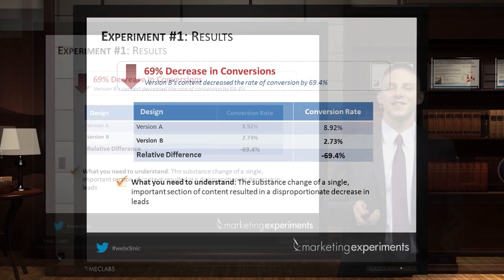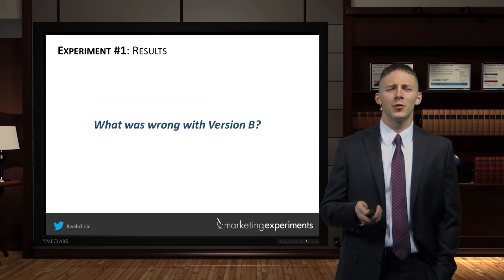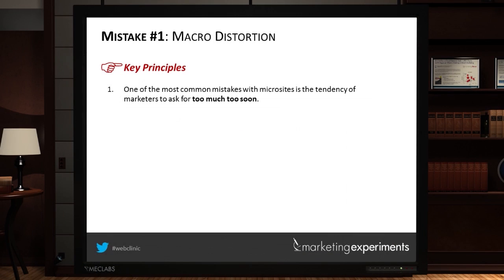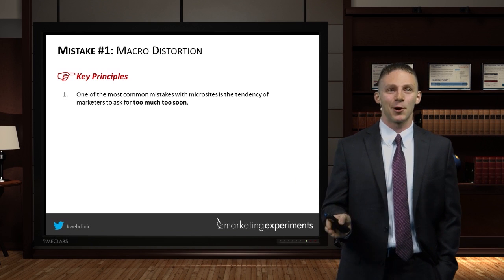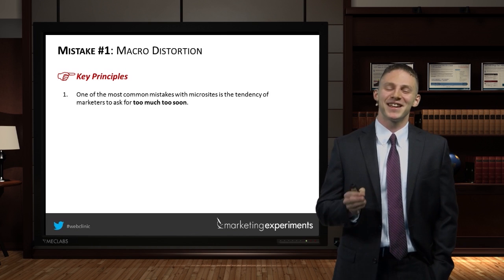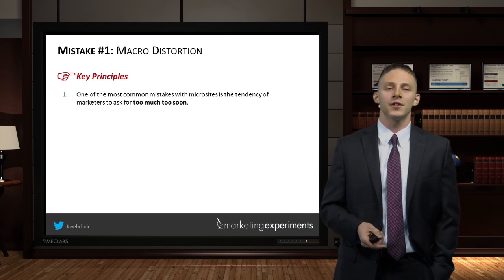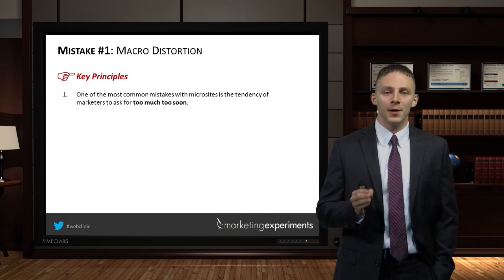One of the most common mistakes we find with microsites is that we're asking people too much too soon. We call that macro distortion. Think of it this way: ask a man with a messy garage to clean the garage — is he going to clean it? Your conversion rate is probably going to be low. You've got to give baby steps. What if you said, 'Hey, why don't you go organize your tools?' or 'Why don't you put in some new cabinets?' The reason I'm not cleaning is because I haven't decided I need to. You've got to help somebody come to that conclusion.